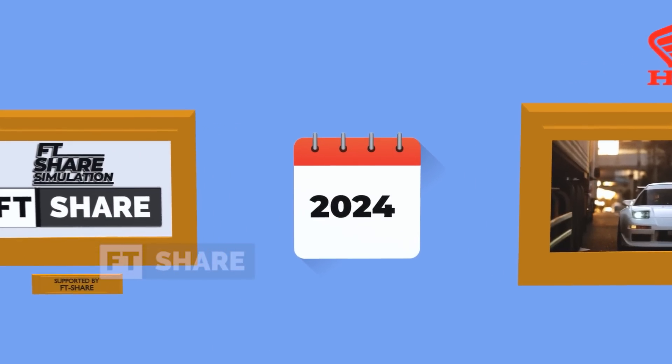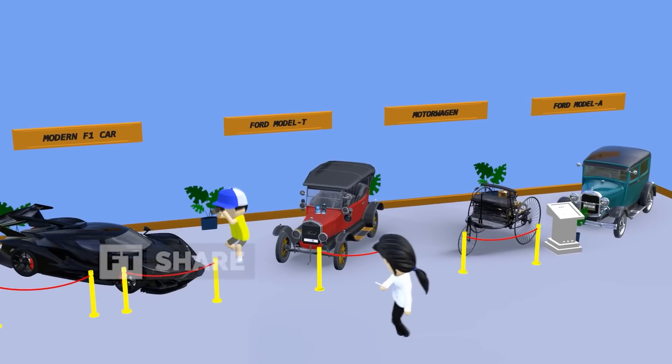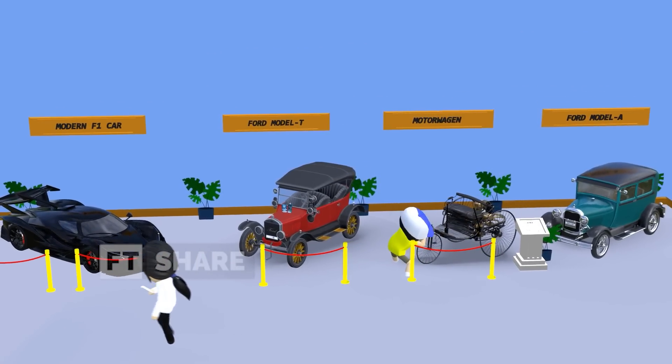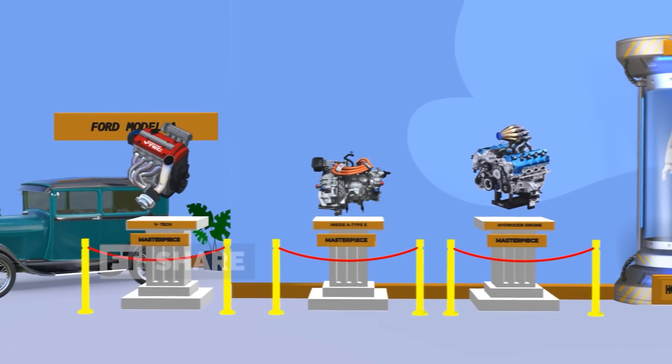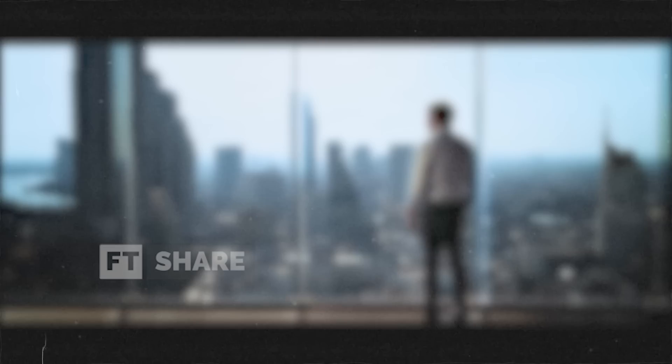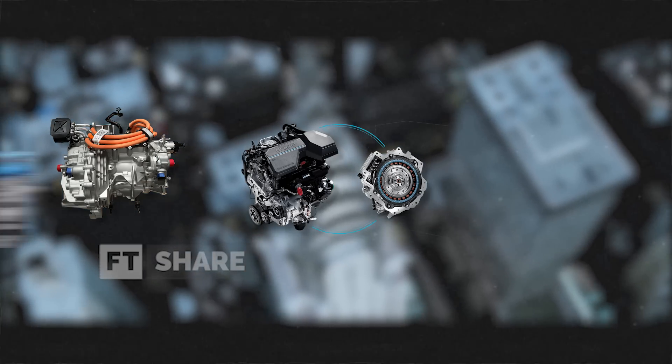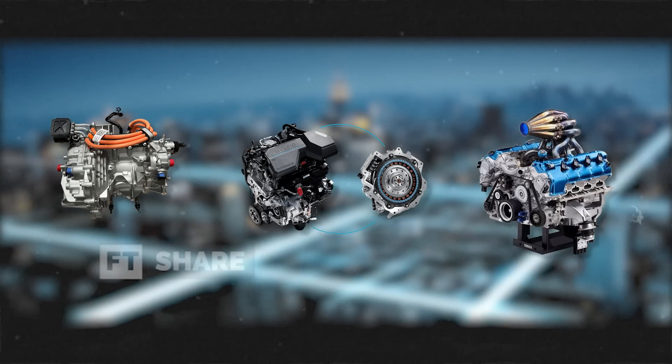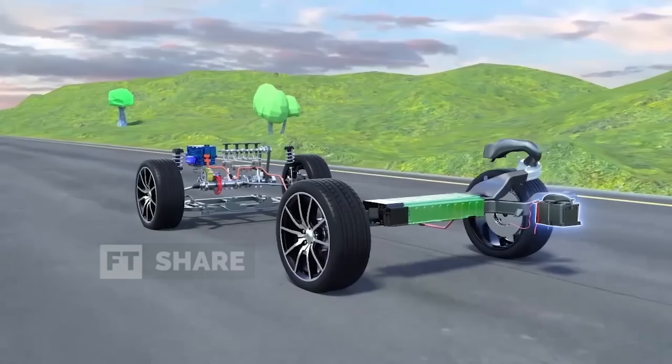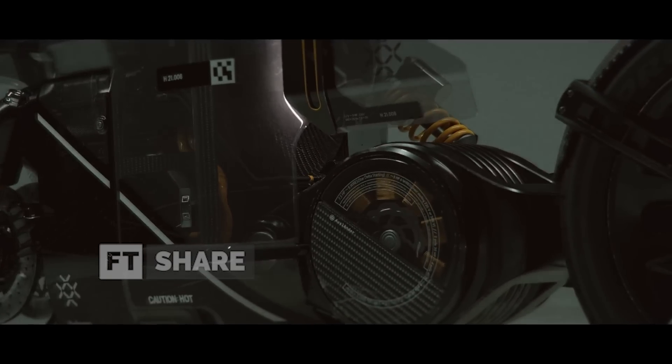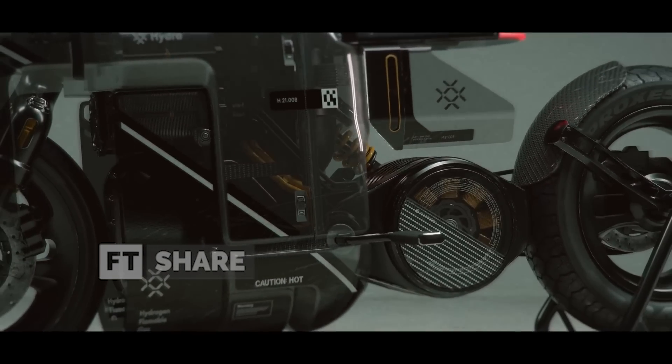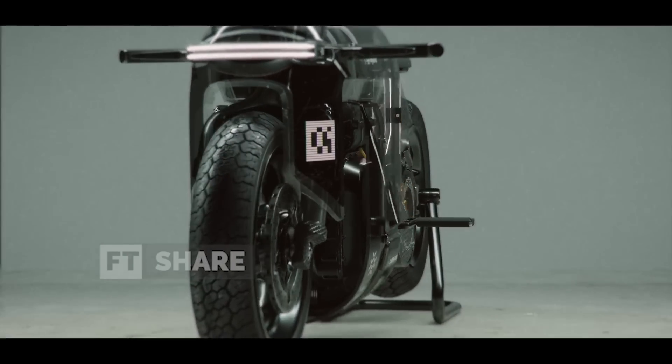As we step into 2024, it's safe to say that we're pretty lucky to witness some incredibly rapid technological advancements. One of the standout innovations in the world of cars includes electric motors, hybrid engines, hydrogen engines, and more. What's even more exciting is that this progress isn't just about four-wheeled vehicles. It's also making its way into the world of two-wheelers, showing that this tech train is unstoppable.